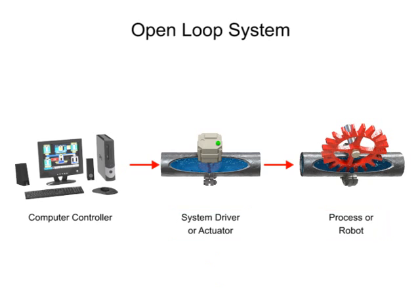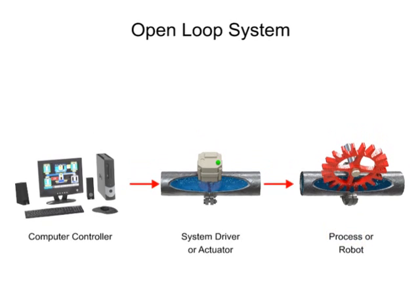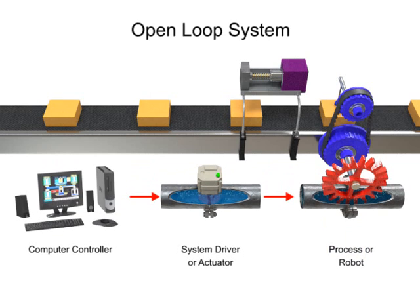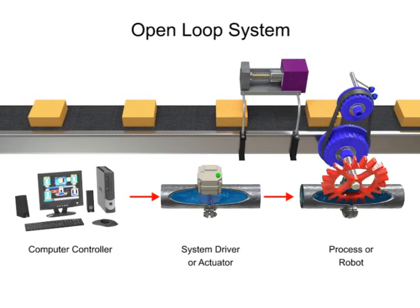The term 'process' in this illustration simply means any piece of equipment that accomplishes work. This could be a robotic arm, a motor, or an engine. For the purposes of this module, we'll focus on robots. Once the signal is received, the robot performs the appropriate action.